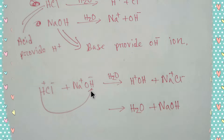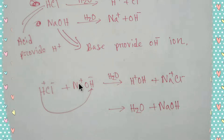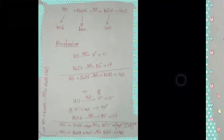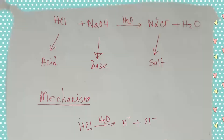This is acid, this is base. The positive part of the acid will combine with the negative part of the base. Here we get H₂O, that is water, and the positive and negative parts give us sodium chloride — which is a salt.